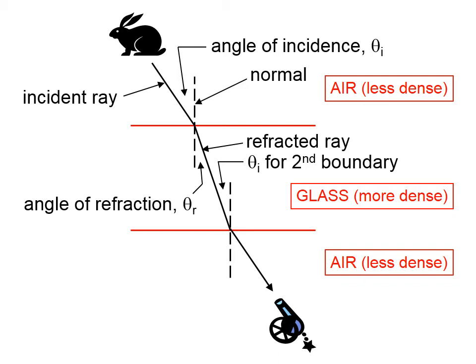When this light, then, leaves the more dense medium and goes into the less optically dense medium, the air, it's going to bend away from the normal. And there's your angle of refraction for the second boundary.